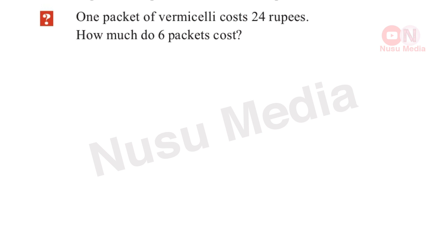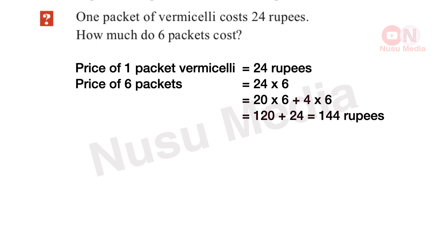1 packet of vermicelli costs 24 rupees. How much do 6 packets cost? Price of 1 packet of vermicelli is 24 rupees. Price of 6 packets is 24 into 6. 20 into 6 plus 4 into 6: 20 into 6 is 120, plus 4 into 6 is 24. Total is 144 rupees.